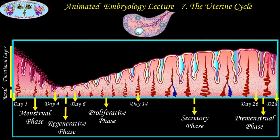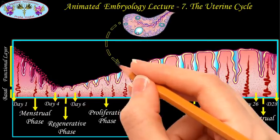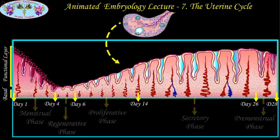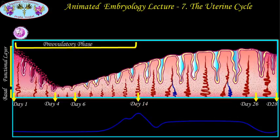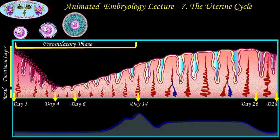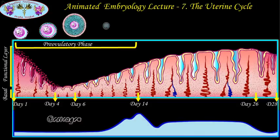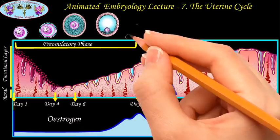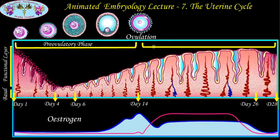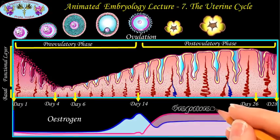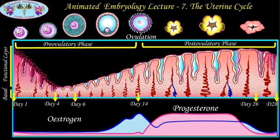The cyclic hormonal activity of the ovary is intimately linked with the cyclic histological changes in the endometrium. The proliferative phase of the uterine cycle goes along with the pre-ovulatory phase of the ovarian cycle and is maintained by estrogen secreted by the follicles of the ovary. Ovulation occurs between the proliferative and secretory stages. The secretory phase of the uterine cycle goes along with the post-ovulatory phase of the ovarian cycle and is controlled by progesterone secreted by the corpus luteum.